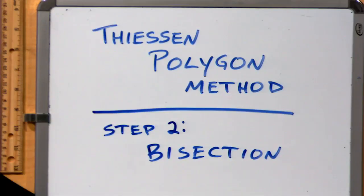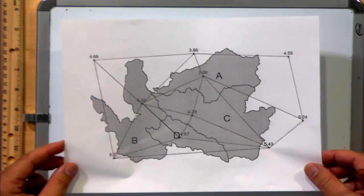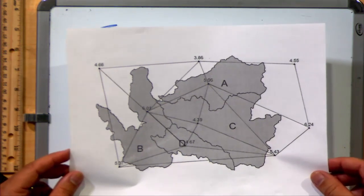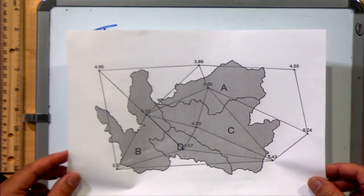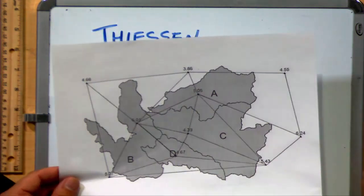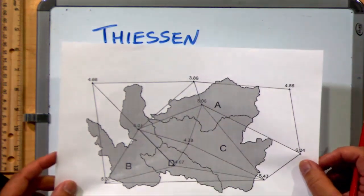So for this video, we're going to talk briefly about how to do the next step in the Thiessen Polygon method. After step one, we've created a Delaunay triangulation of our data set. And now what we're going to do is the next step of the Delaunay triangulation, which is to divide each of these segments or bisect each segment in the triangulation.